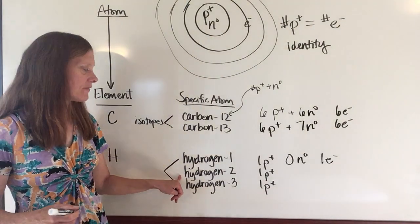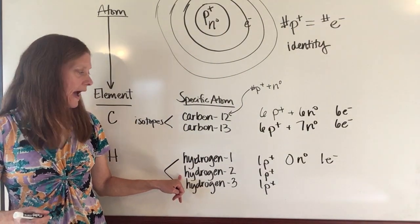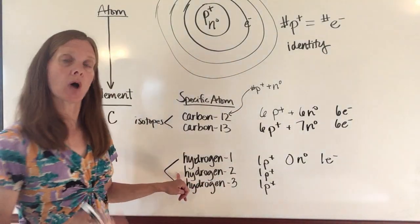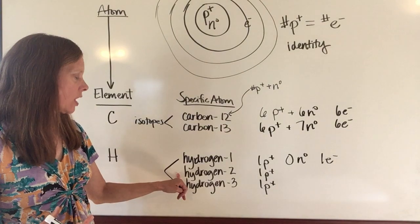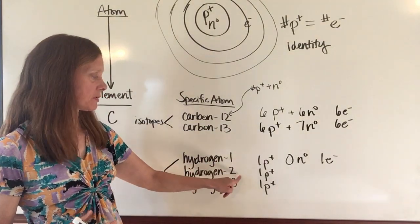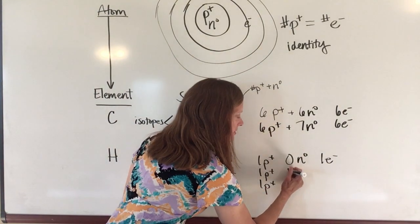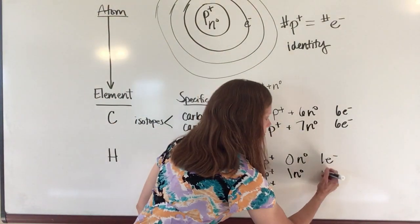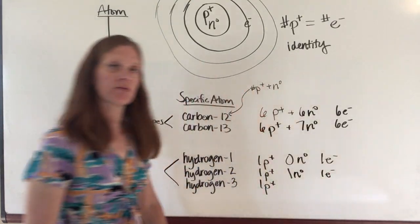How about if I have a hydrogen-2 atom? Again, how many protons are there? Always one, because all hydrogen atoms have one proton. But if it's a hydrogen-2, that means protons plus neutrons must add up to two, so that means that I must have one neutron. And again, protons and electrons are equal, so I'll have one electron.